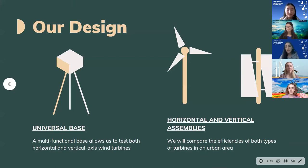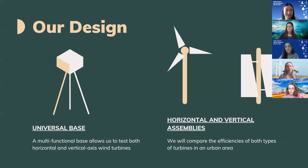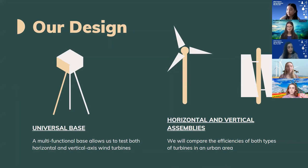Our plan is to construct a portable turbine approximately five feet tall, which can be placed anywhere on campus to generate electricity from wind rotating its blades. When approaching our design, we went for a universal base that would allow for simple interchangeability between horizontal and vertical blade arrangements, which has been split into two separate subgroups. The choice between horizontal or vertical depends on factors from altitude to wind speeds and inconsistencies with the wind.